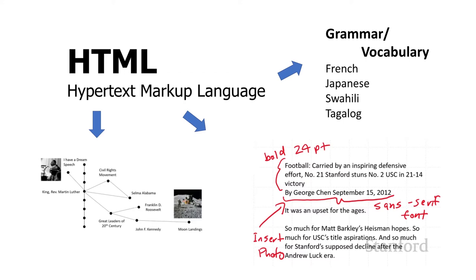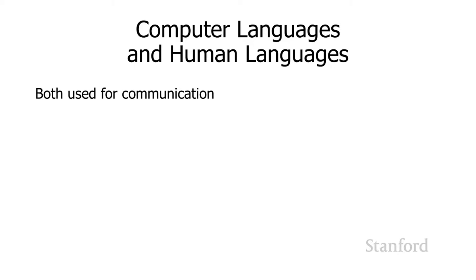We all have an intuitive idea of what language is, but what is the relationship between a computer language and a human language? Is it the same thing? Both computer languages and human languages are the same in that they're both used for communication. But one we're communicating with a human, and the other we're communicating with a computer.